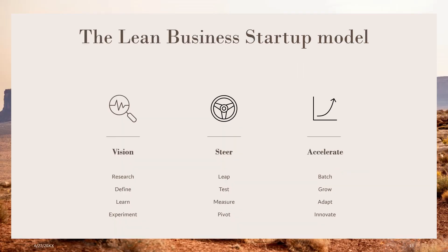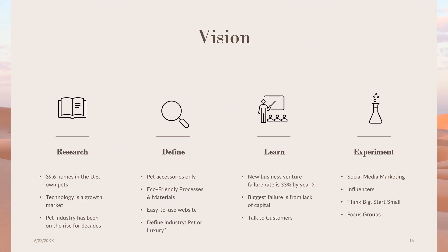The next slide I begin to speak about the startup business model. In this example, I'm using the lean startup business model, which is based on the three elements of vision, steer, and accelerate. In subsequent slides, I get into each element more in depth, so for vision here you see the research, define, and learn.